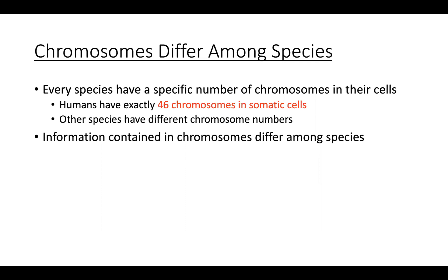Thanks to the Human Genome Project, we know which genes are found on which chromosomes for the human. That information could be different amongst different species. For example, the gene encoding eye color in humans may be on chromosome four, but in a rabbit the gene controlling eye color might be on chromosome 12.